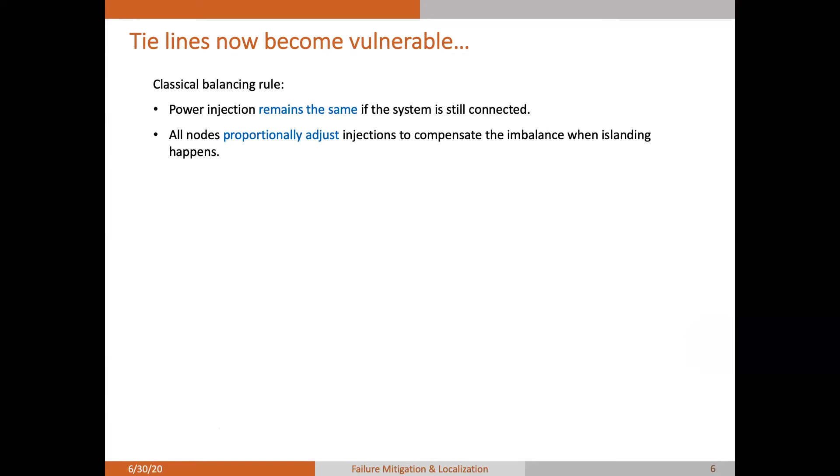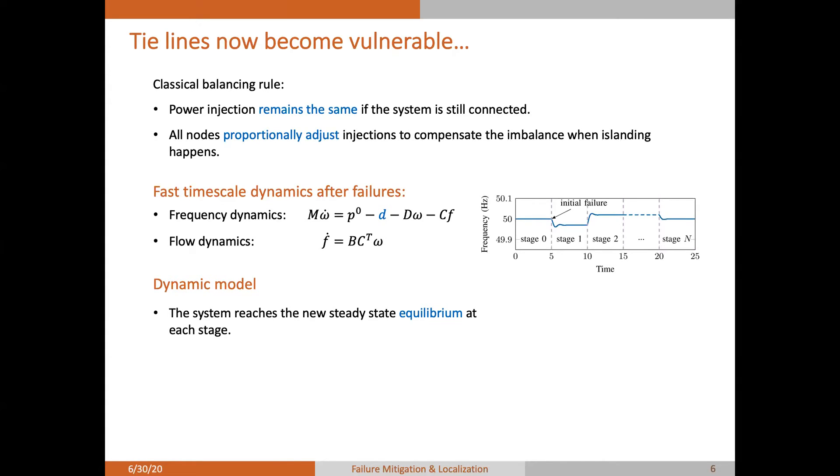But you may already see that the tie lines now become vulnerable in this DC model. In fact, there is actually fast timescale dynamics after the line failure, as we show here, the linearized frequency and flow deviations. In this dynamic model, at each stage, the system evolves following these dynamic equations and we assume that it reaches the new steady state equilibrium at the end of each stage, just as shown in the red figure. This is a reasonable assumption since the line failures usually require some time for heat accumulation. Using this assumption allows us to directly compute the equilibrium point from some optimization problem without simulating the whole dynamic process.